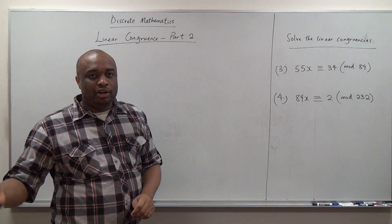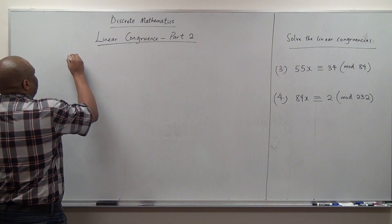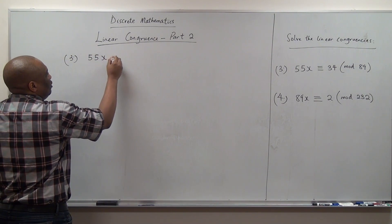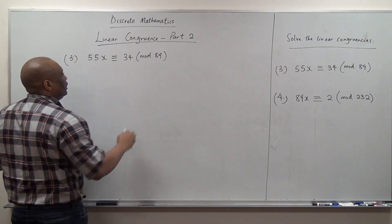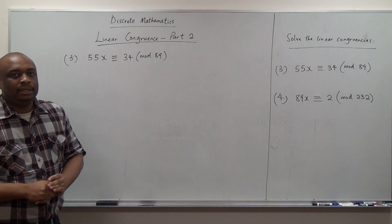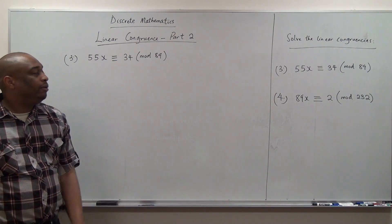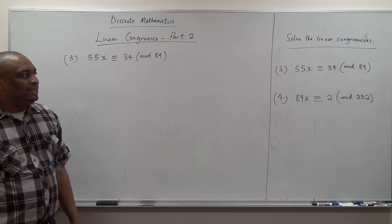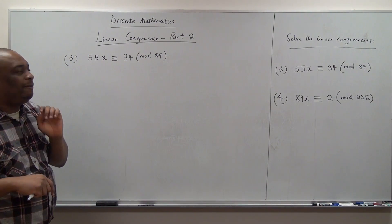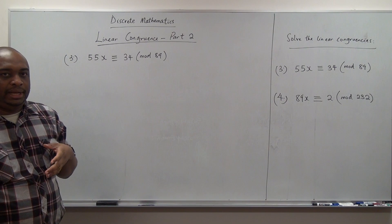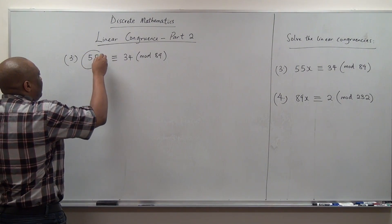We want to finish because the questions we have here are based on the modular inverse — this is just a continuation of that. So you want to solve for x: number three, 55x is congruent to 34 mod 89. What you want to do is find x such that when you multiply by 55, it will be congruent to 34 mod 89. The easiest way we solve this is to look at 55 and 89 and find the inverse of 55 mod 89.